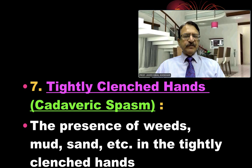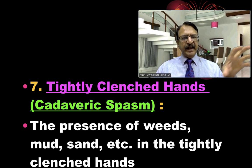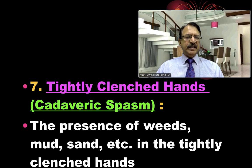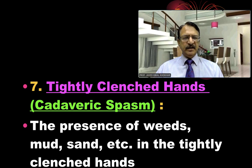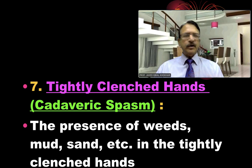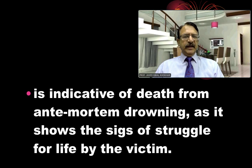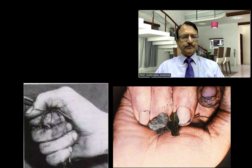Regarding cadaveric spasm, the person is in extreme emotional condition and to save his life will grasp weeds and branches of trees, which will be tightly clenched in the hands. The presence of sand, weeds, mud, or branches of a tree in tightly clenched hands — that is cadaveric spasm. The muscles at the time of death do not enter into primary relaxation; they are rigid, cadaveric spasm is present. This is indicative that the person was drowned and is a sign of struggle. This is how you can see the grass and leaves grasped in the hands.